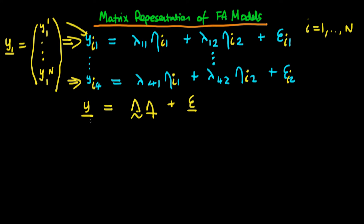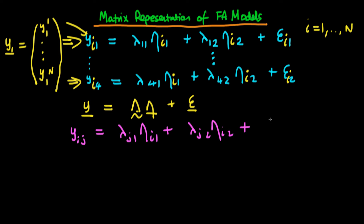When you see the equation written in this form, it becomes quite apparent that we could write down the entire system of equations using solely indices. Because we've introduced the index i, we're talking about 4n observations on our left-hand side. So we can write down our equation as Y_ij equal to lambda_j1 times eta_i1 plus lambda_j2 times eta_i2 plus epsilon_ij, where i takes values 1 through n and j represents which observable we're talking about, taking values 1, 2, 3, or 4. We have condensed our system of 4n equations into a single equation using indices.